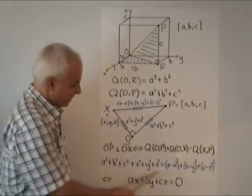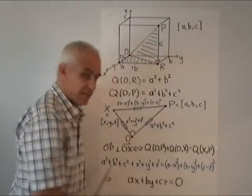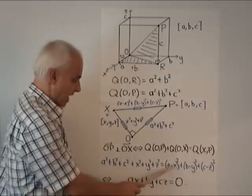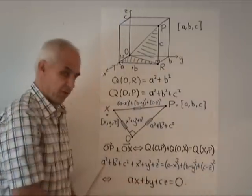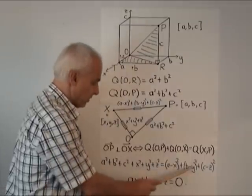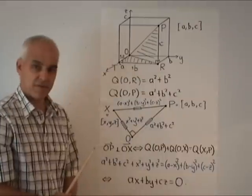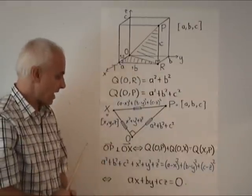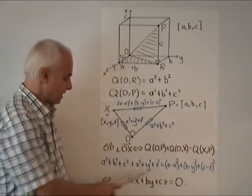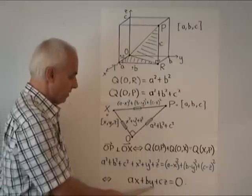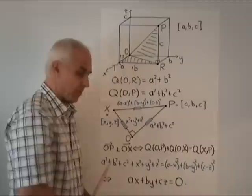And now when you write this out and expand the right-hand side, you see that you also get an A squared plus B squared plus C squared over here. And you also get an X squared plus Y squared plus Z squared over here. And they cancel exactly what's on the left. And all that's remained after you divide by two is the cross terms here.